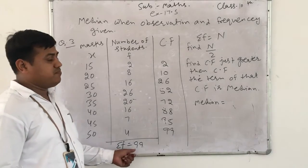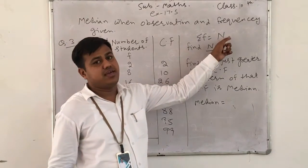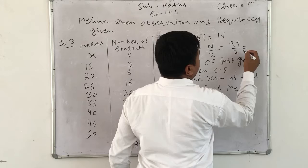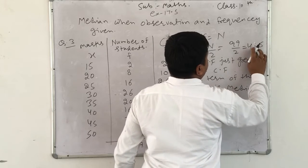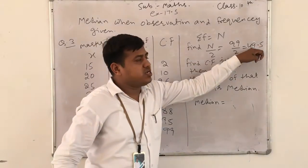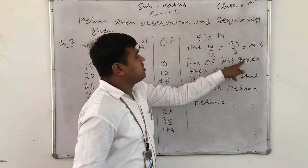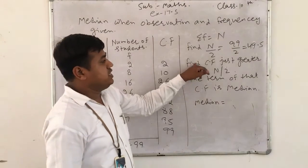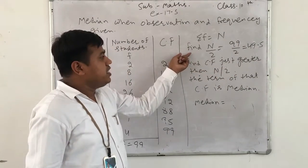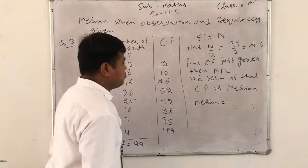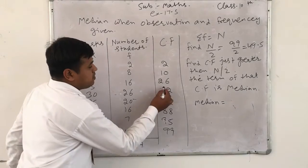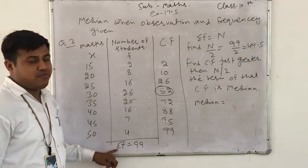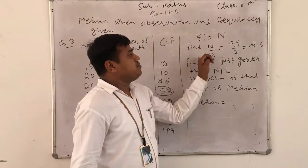So here find CF just greater than n upon 2. Find CF just greater than n upon 2. Here the n upon 2 is 49.5, so just confirm: CF just greater than CF, but this with CF in the n upon 2 is 49.5.